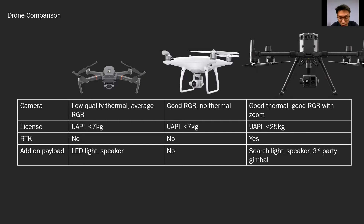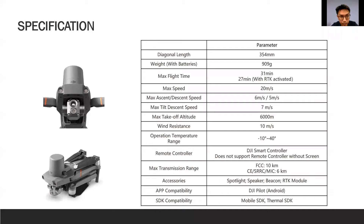That sets the context of what's currently available, and now I'll go into the M2EA. The Mavic 2 Enterprise Advance is still very light at 909 grams, with a flight time of 31 minutes maximum, or about 27 minutes with the RTK head attached. All specifications follow very closely to the Mavic 2. Bear in mind that this works only with the DJI Smart Controller — it cannot work with the previous Mavic 2 remote.